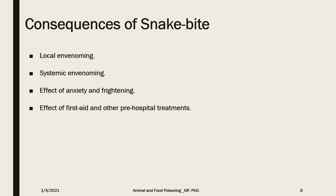Victims of snake bite may suffer from one or all of the following manifestations. First is local envenoming, confined to the bitten part of the body. Second is systemic envenomation, affecting organs and tissues away from the bite site, which may be fatal or life-threatening. Third are the effects of anxiety and fright caused by the experience, which can be misleading for medical personnel. Lastly, the effects of first aid and pre-hospital treatments may also cause misleading clinical features. All these manifestations should be considered when managing snake bite toxicity.